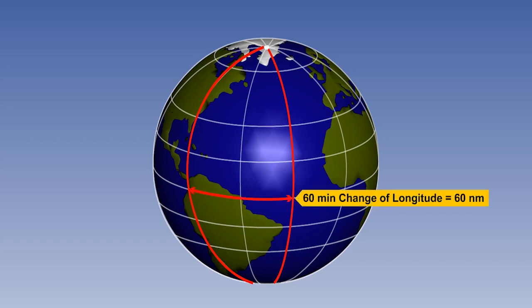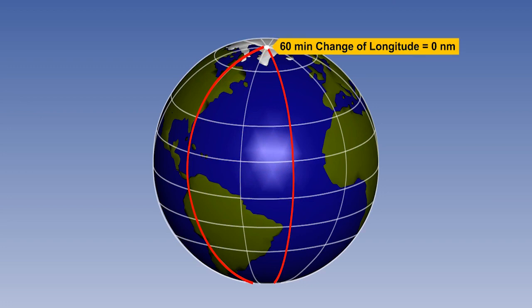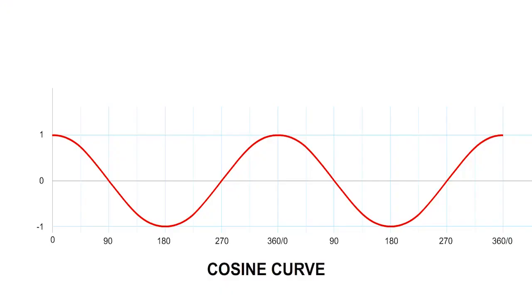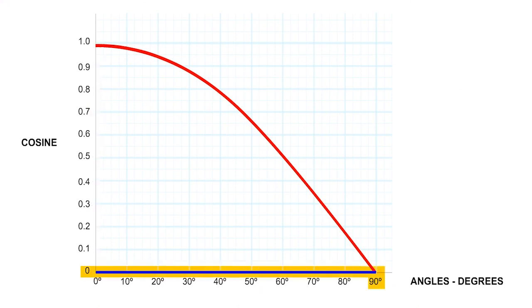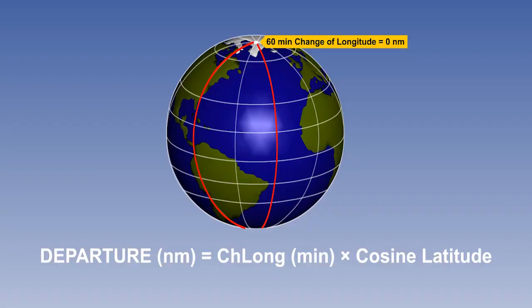At the Equator, the change of longitude in minutes is multiplied by one. At the pole, the change of longitude in minutes is multiplied by zero. Departure is therefore a function of cosine, which has a value of one at zero degrees and zero at 90 degrees. The equation is therefore that departure equals the change of longitude in minutes multiplied by the cosine of the latitude.